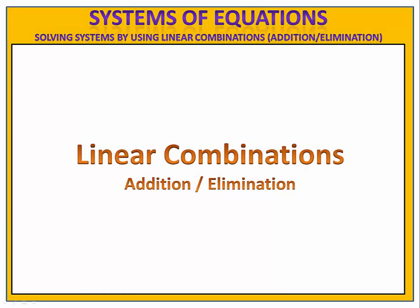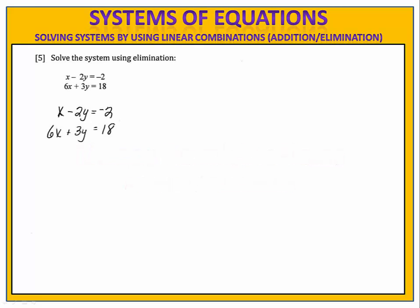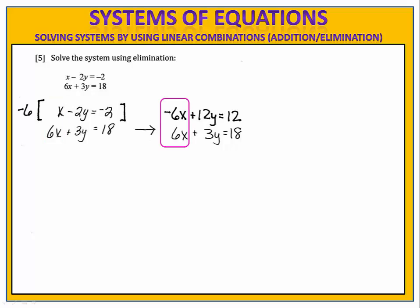A third way to solve a system of equations is by creating linear combinations. Sometimes we refer to this as addition or elimination because really what you're doing is adding the two equations together in order to eliminate a variable. In exercise 5, we have two equations: x minus 2y equals negative 2 and 6x plus 3y equals 18. The objective here is to get a pair of variables that are opposites. In this case, I have a 1x and a 6x. To make these opposite variables, I can use the multiplication property of equality and multiply both sides of the top equation by negative 6.